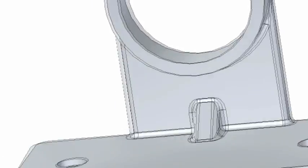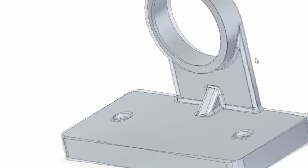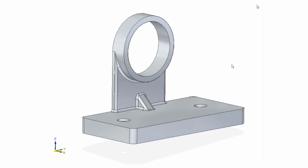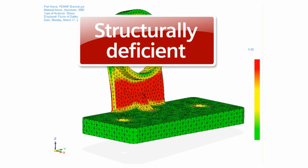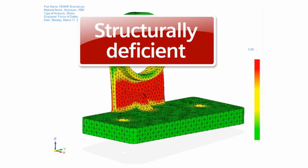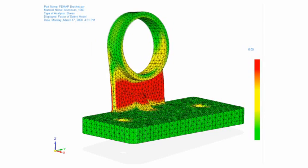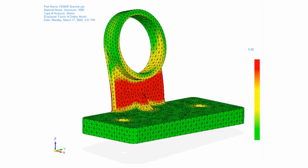How many times have you had to prove someone else's work without the benefit of knowing how it was designed? Here an analyst finds a structurally deficient part as identified by the massive red areas. With synchronous technology, anyone can make complex modifications without needing to know how the model was created.